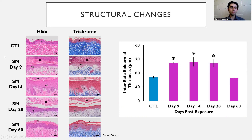Following sulfur mustard exposure, from day 9 to day 60, you see scab formation, neoepidermis formation, as well as inflammatory infiltrate found in the dermis, which can be even more readily seen in the trichrome stain.